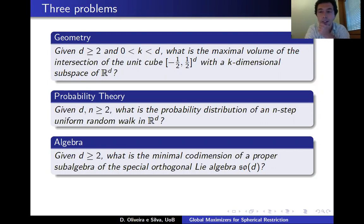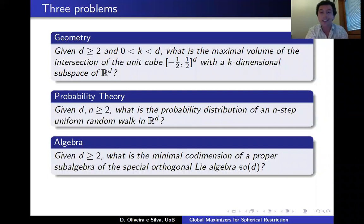The last problem has to do with the special orthogonal group SO(d), which is a Lie group with a corresponding Lie algebra denoted frac SO(d). The question is: what is the largest proper sub-algebra of SO(d) you can find? In other words, what is the minimal co-dimension of a proper sub-algebra of the special orthogonal algebra?